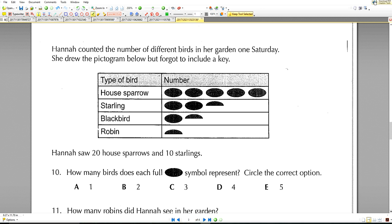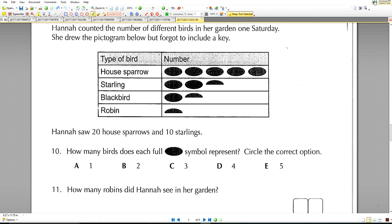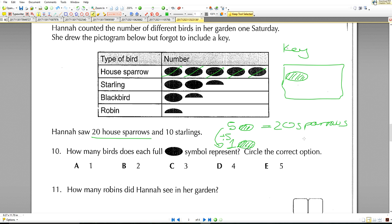Hannah counted the number of different birds in her garden one Saturday. She drew the pictogram below but forgot to include a key. Now we always have a key on a pictogram. So I'm just going to put my key here in anticipation of what it will be. Hannah saw 20 house sparrows. So we have one, two, three, four, five. So that means she's used five of these pictures to represent 20 sparrows. Now we need to work out what one of the pictures represents in that case. So we've got to go from five to one. So five to one divide by five. What we do on the left, we repeat on the right. So 20 divided by five is four. So we've found the key. So this represents four birds.